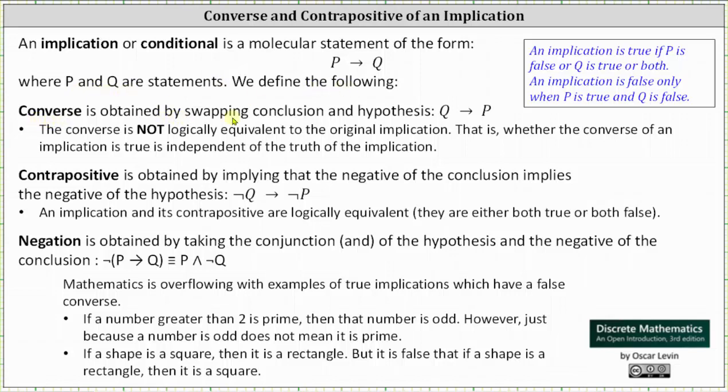The converse is obtained by swapping the conclusion and hypothesis, meaning swapping Q and P. The converse of if P then Q is if Q then P. The converse is not logically equivalent to the original implication. That is, whether the converse of an implication is true is independent of the truth of the implication.